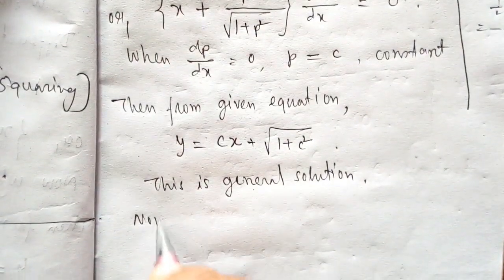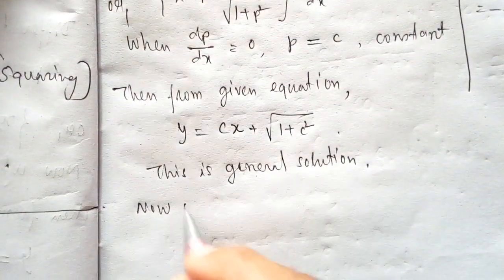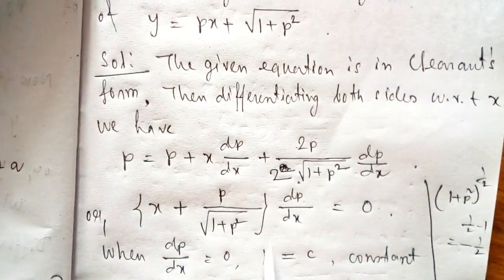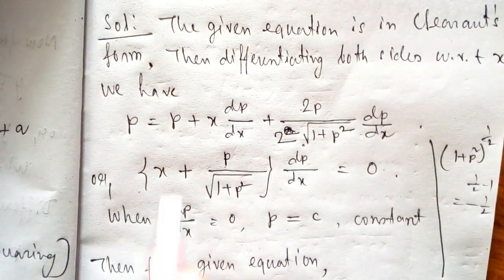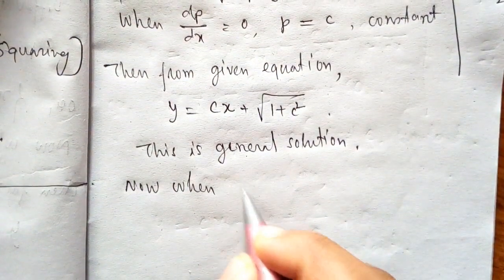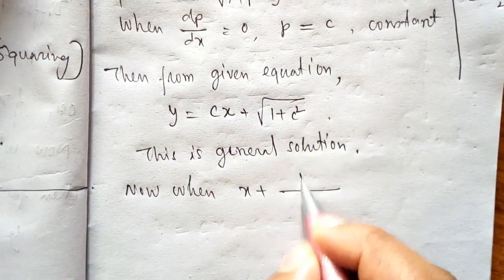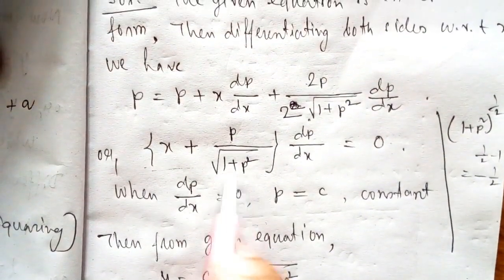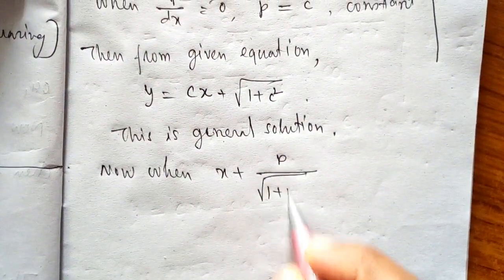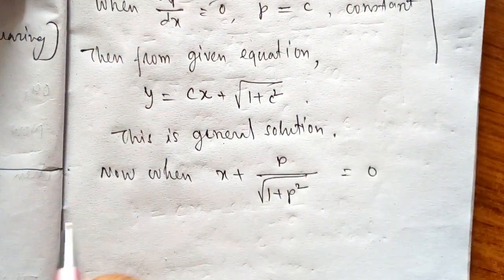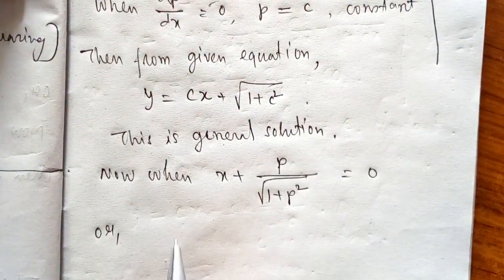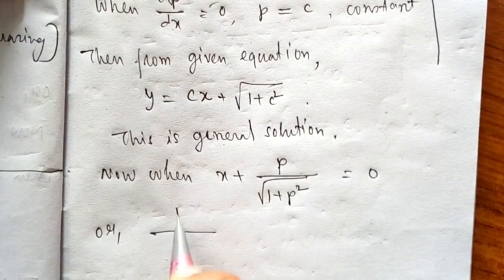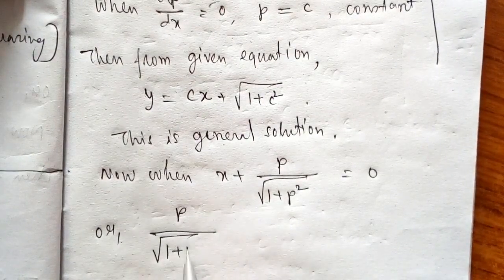Now we find the singular solution. For the singular solution, we use the other factor: x + p / √(1 + p²) = 0, which gives p / √(1 + p²) = −x.